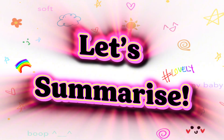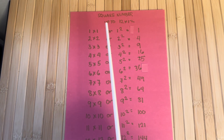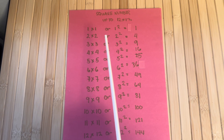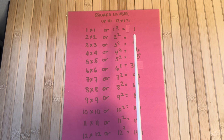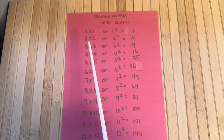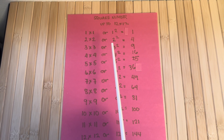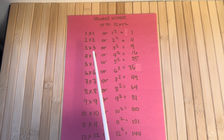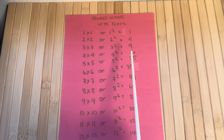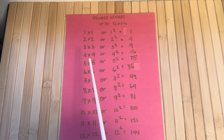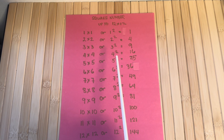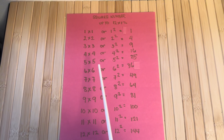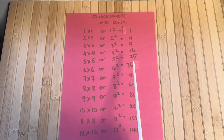Let's summarize. Let's check out square numbers up to 12 by 12. 1 times 1, or 1 squared, is equals to 1. 2 times 2, or 2 squared, is equals to 4. 3 times 3, or 3 squared, is equals to 9. 4 times 4, or 4 squared, is equals to 16. 5 times 5, or 5 squared, is equals to 25.